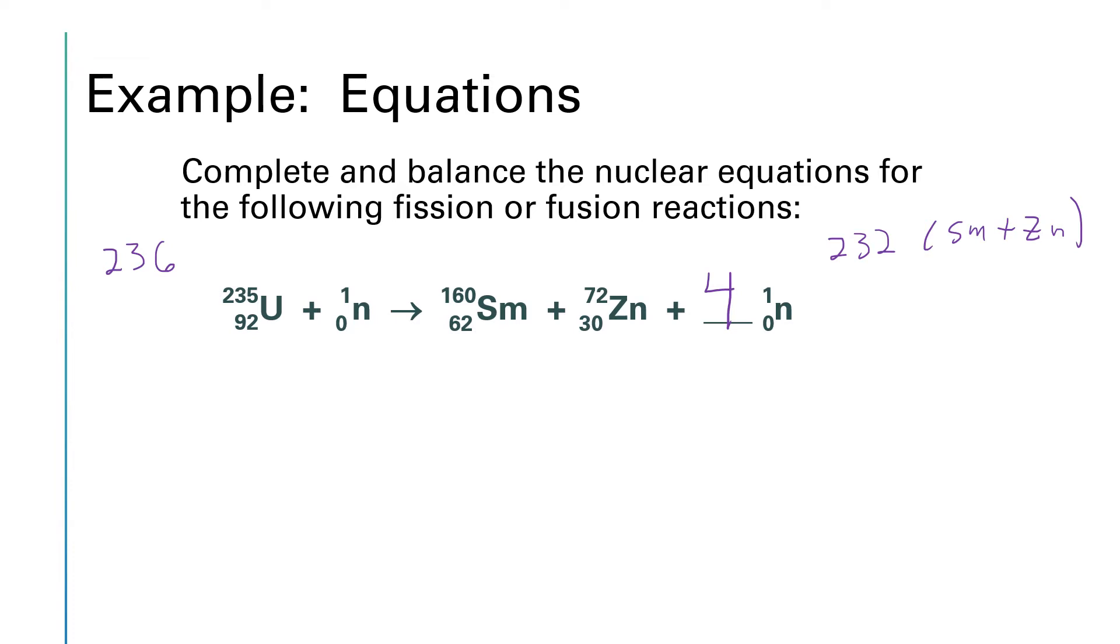Now let's just double check that the atomic numbers, the ones on the bottom, add up. On the left hand side we have 92 plus 0 which is 92, and on the right hand side we have 62 plus 30 plus 4 times 0, which is 92 as well. So the atomic numbers balance as well as the mass numbers. Let's look at another example.